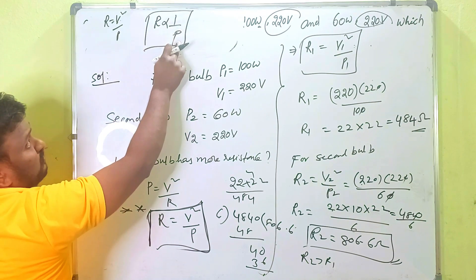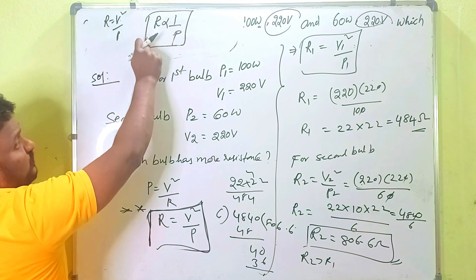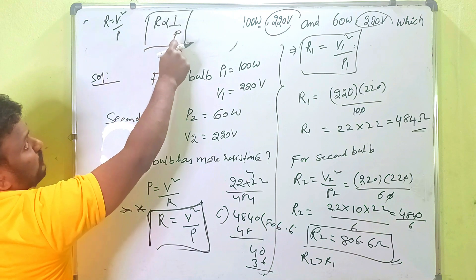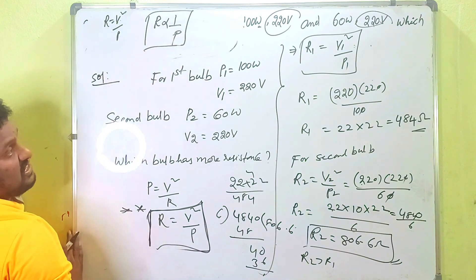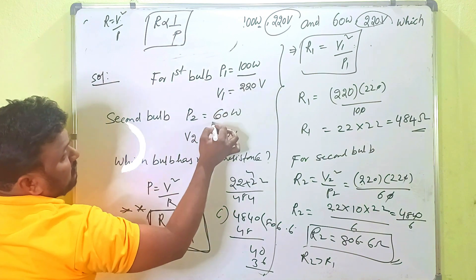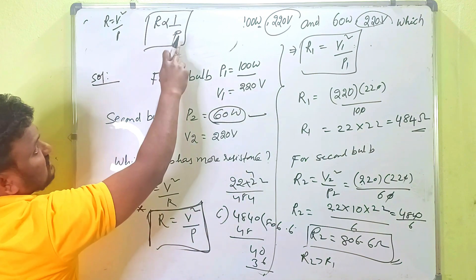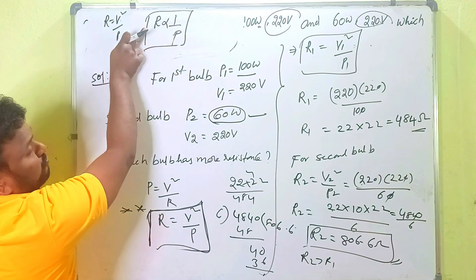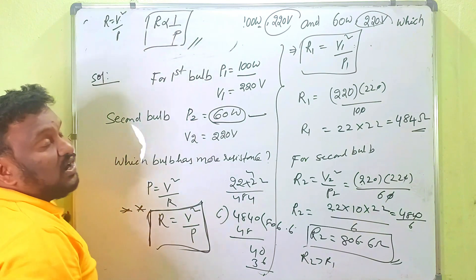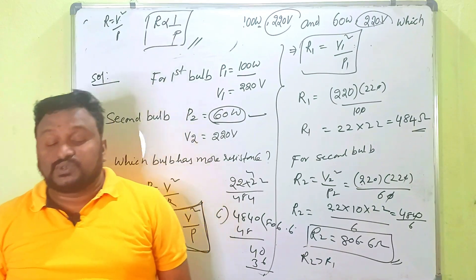When power is more, resistance is less. When power is less, resistance is more. When power is more, resistance is less. Inversely proportional. That's why among the two bulbs, the second bulb has less power, the resistance is more. That's why the second bulb has more or greater resistance.